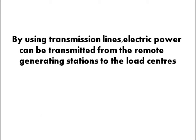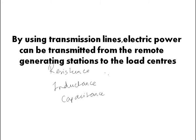The overhead transmission line has three constants: first one is resistance, then inductance, and the third one is capacitance. These three parameters are uniformly distributed over the entire transmission line, and the resistance and inductance form the series impedance.